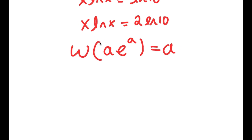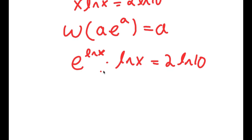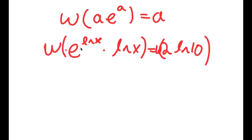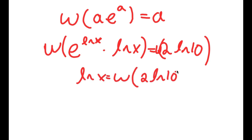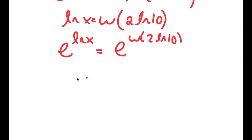I'm going to rewrite x as e to the power of ln x, since e and ln cancel out to give x. So I have e to the power of ln x times ln x equals 2 times ln 10 — this is now in the form a times e to the power of a. Taking the Lambert W function on both sides gives ln x equals W of 2 times ln 10. Then taking e to the power of both sides, e to the power of ln x equals x, so x equals e to the power of W of 2 ln 10.